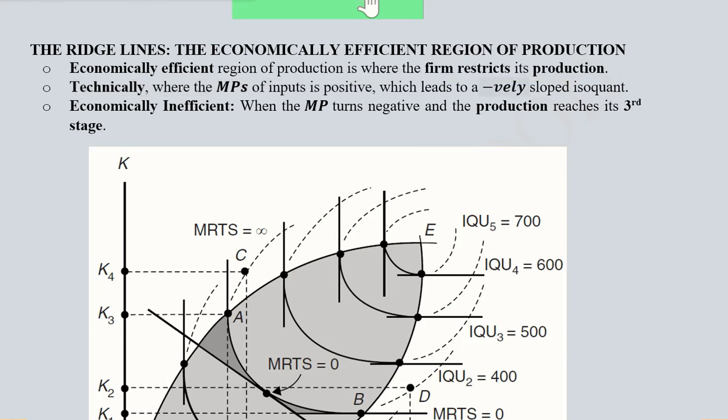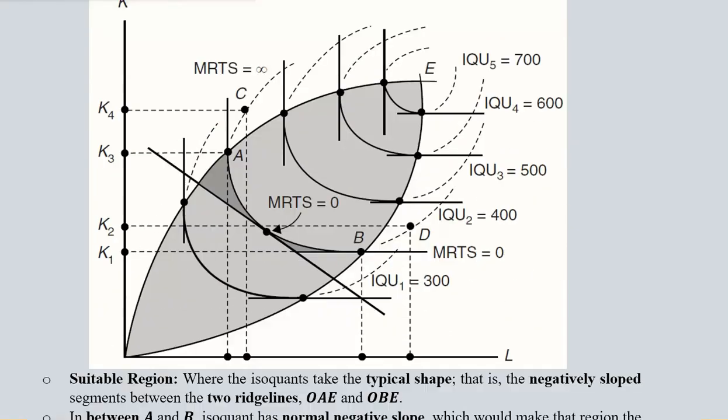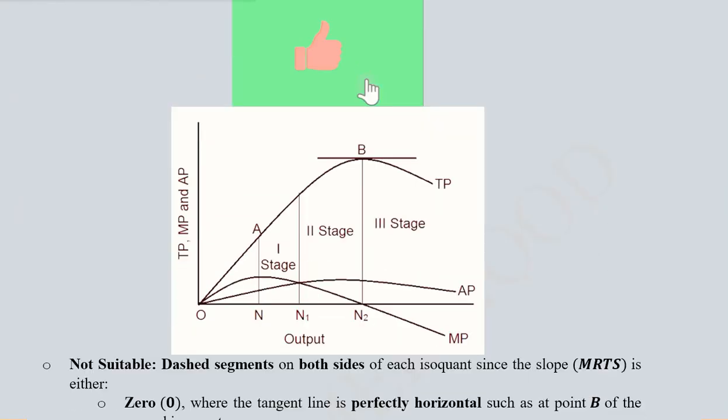Which lead to negatively sloped isoquants. So in this area the MPs of the inputs are positive. Let us see here, this is the diagram that we have been studying before, where we plot the marginal product, the average product, and the total product of the input. Here we see that there are three stages, out of which MP is positive in the first stage and in the second stage, but in the third stage becomes negative.